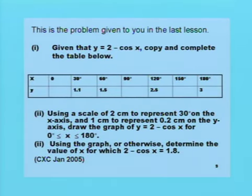This is the problem given to you in the last lesson. Part one: Given that y equals 2 minus cos x, copy and complete the table below. The table is given. Part two: Using a scale of 2 cm to represent 30 degrees on the x axis and 1 cm to represent 0.2 on the y axis, draw the graph of y equals 2 minus cos x for x between 0 degrees and 180 degrees. Part three: Using the graph or otherwise, determine the value of x for which 2 minus cos x equals 1.8. Question taken from CXC January 2005. A similar question to the one we solved a moment ago.